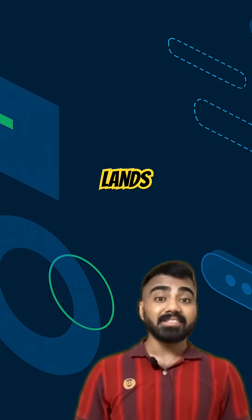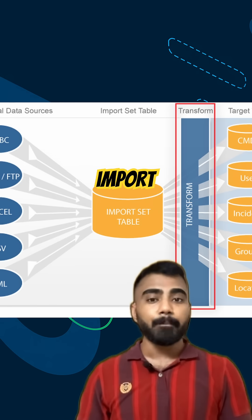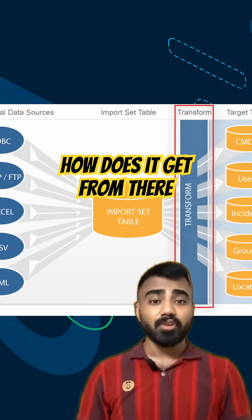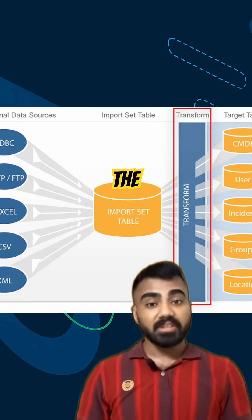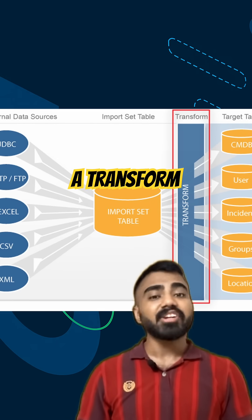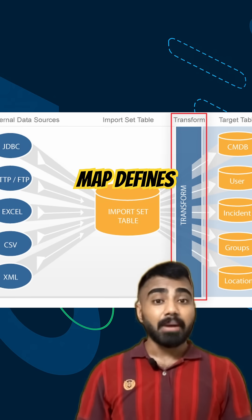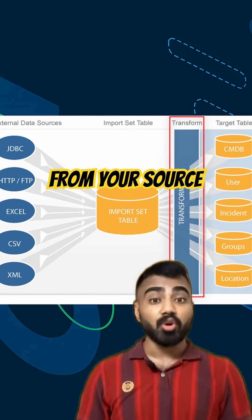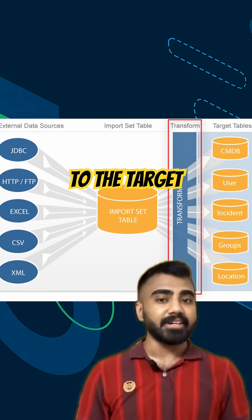The data first lands in a temporary table called an import set. But how does it get from there to your CMDB? The answer is a transform map. A transform map defines how each field from your source maps to the target.